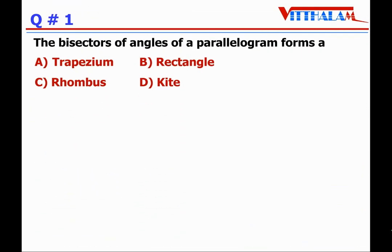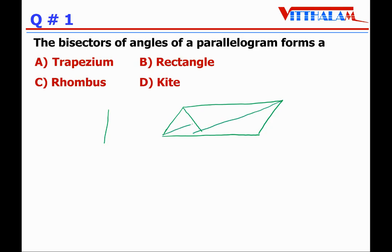The bisectors of angles of a parallelogram form which shape? A parallelogram means two opposite sides are parallel and equal. If we draw the bisectors of each angle — the first, second, third, and fourth — we can see that these bisectors form a rectangle. It cannot be a trapezium, it cannot be a rhombus.